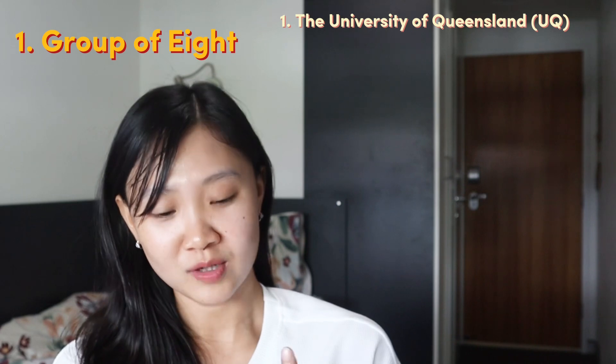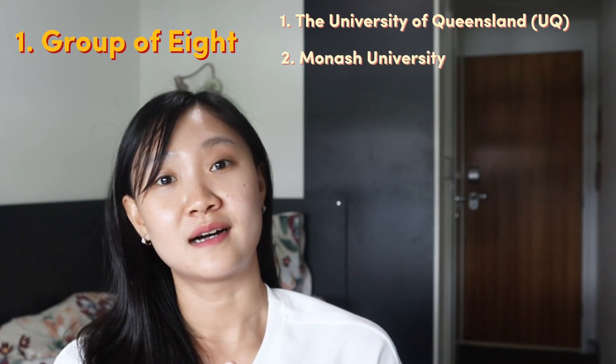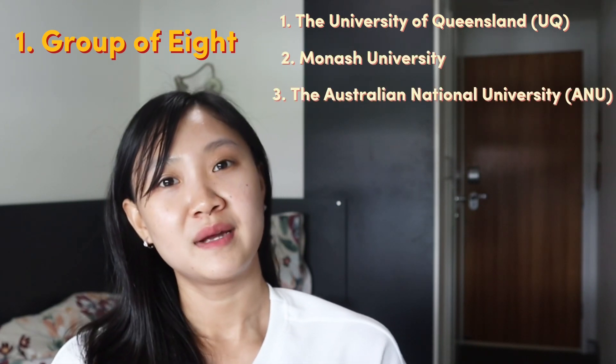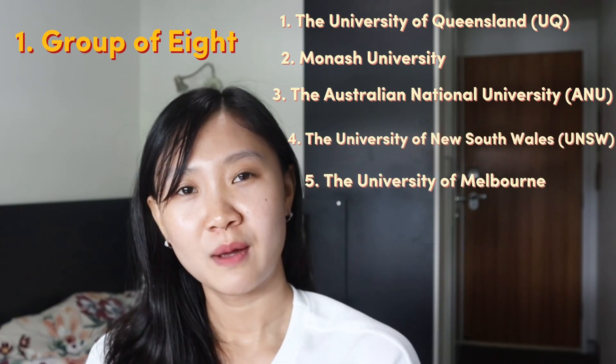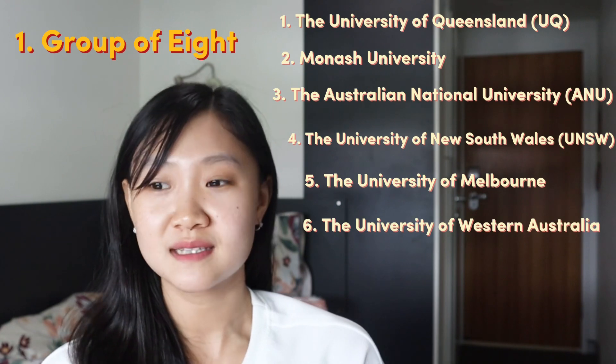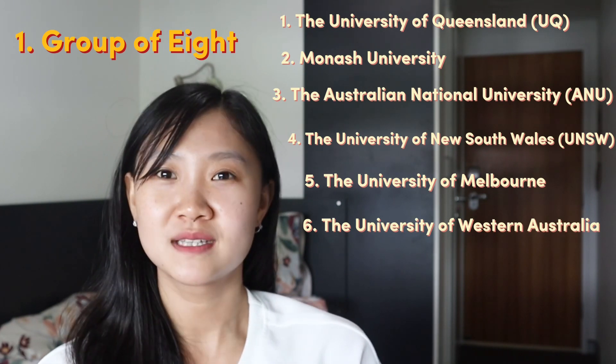The Group of Eight is the leading university group in Australia. It includes the University of Queensland, Monash University, ANU, New South Wales, Melbourne University, Western Australia, and University of Adelaide.